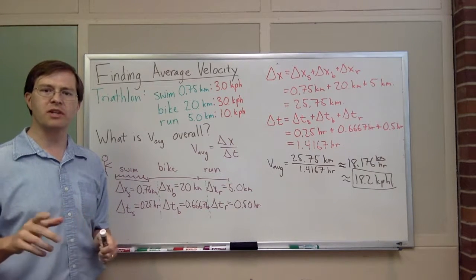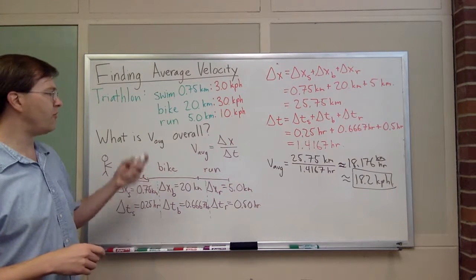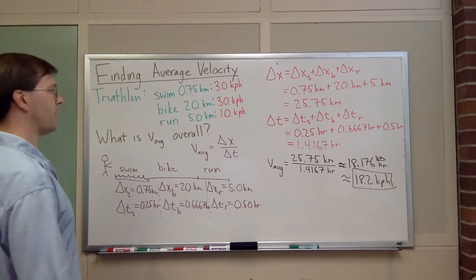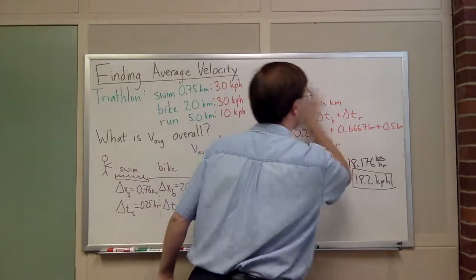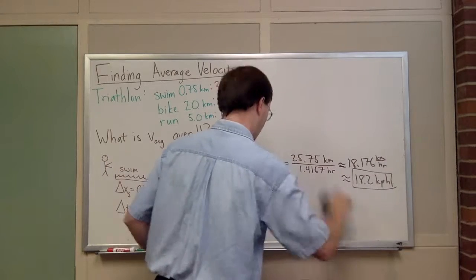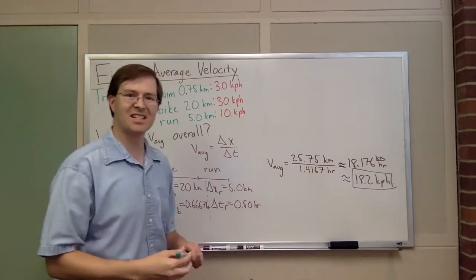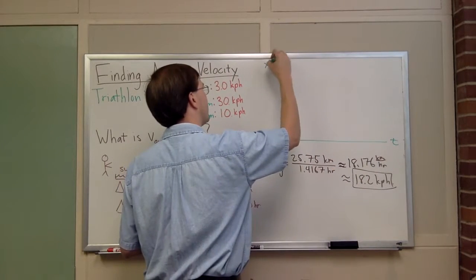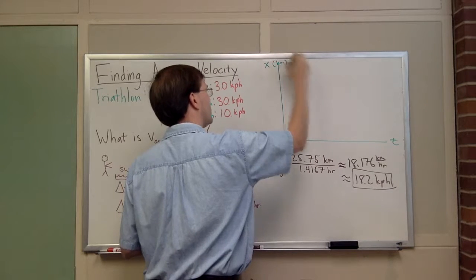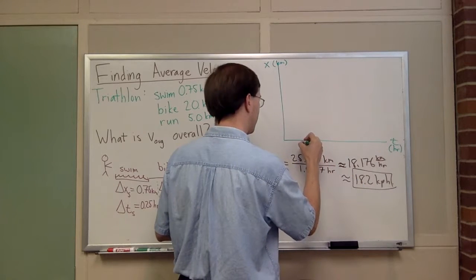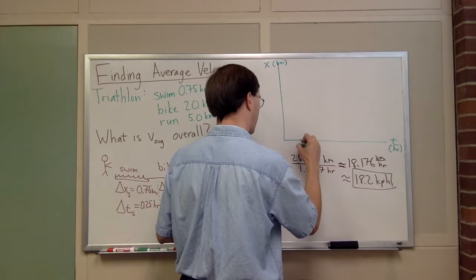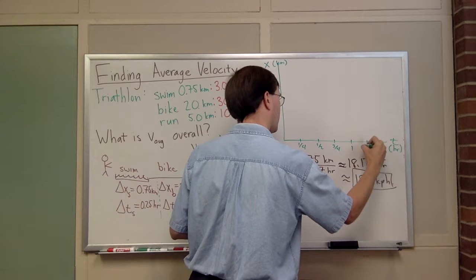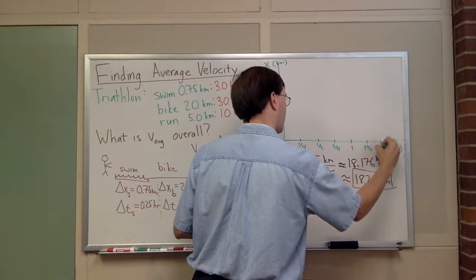The one other thing I want to do is talk about how to visualize this as a graph. I'll put a graph up here. I'm going to put some axes on the graph. Here's my time here and x here. X will be in kilometers and time will be in hours. This is a quarter hour, a half, three quarters, one, one and a quarter, one and a half. Those are 15 minute increments in time.